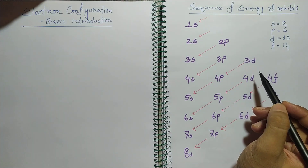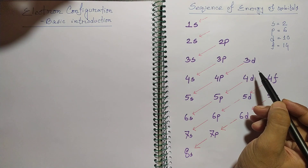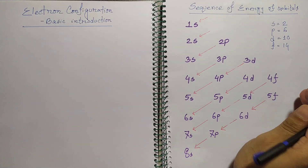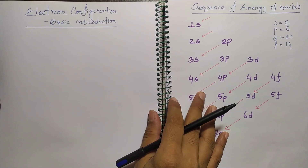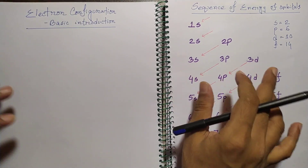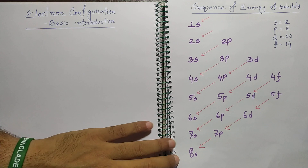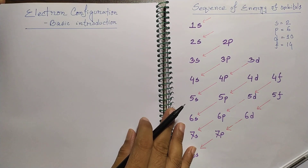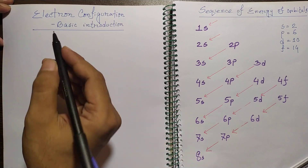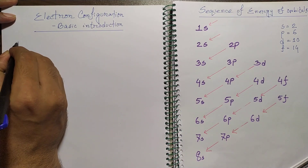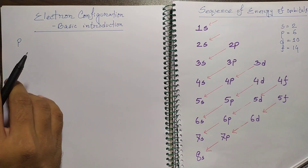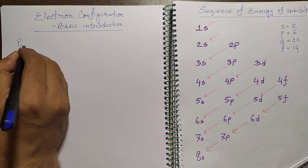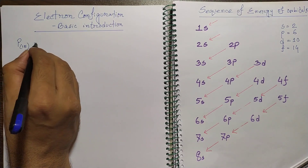When writing the electron configurations for specific elements, we will follow some rules. So now from that sense we can go to the next level. Think about a basic electron configuration — like phosphorus. You know that the atomic number of phosphorus is 15.